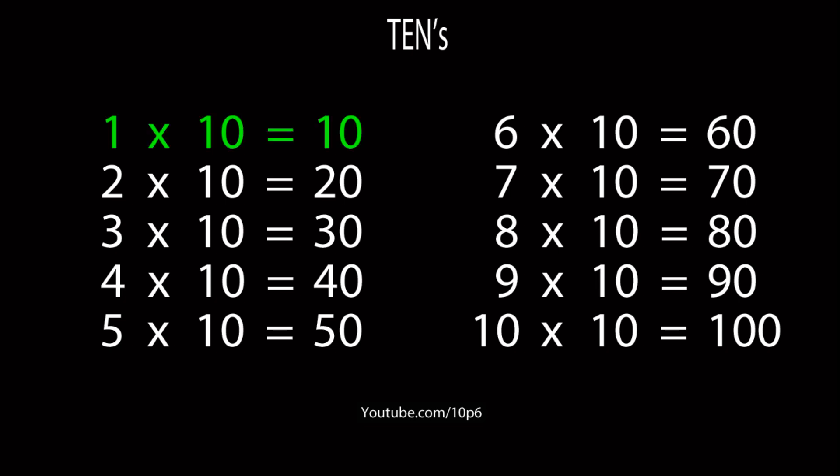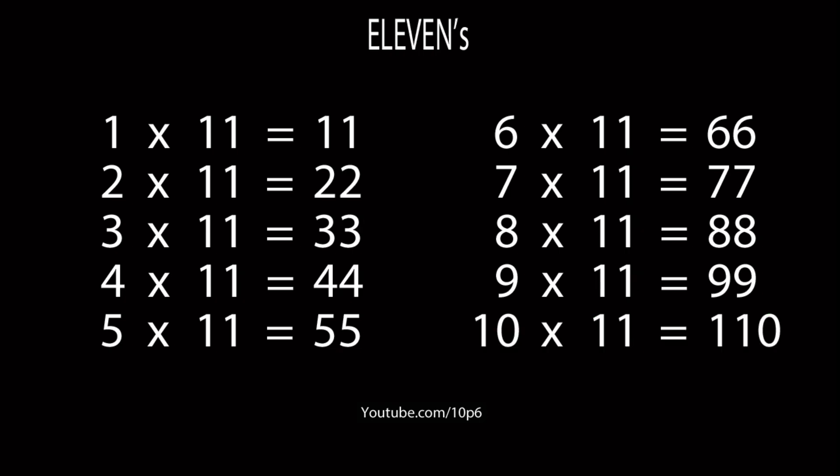10s. 1 10 is 10, 2 10s are 20, 3 10s are 30, 4 10s are 40, 5 10s are 50, 6 10s are 60, 7 10s are 70, 8 10s are 80, 9 10s are 90, and 10 10s are 100.